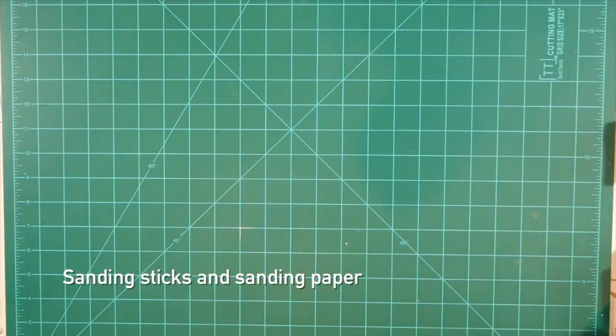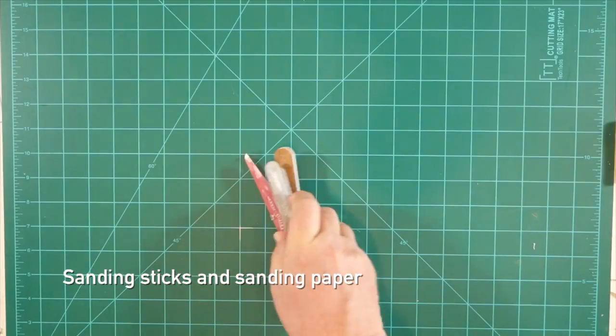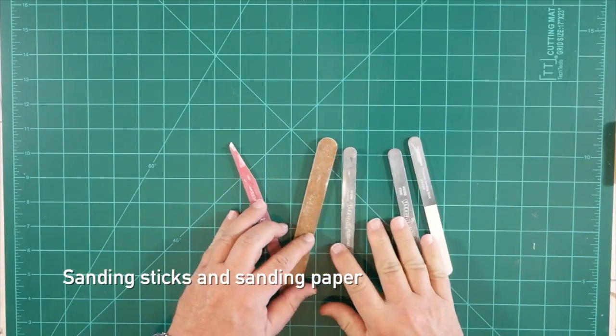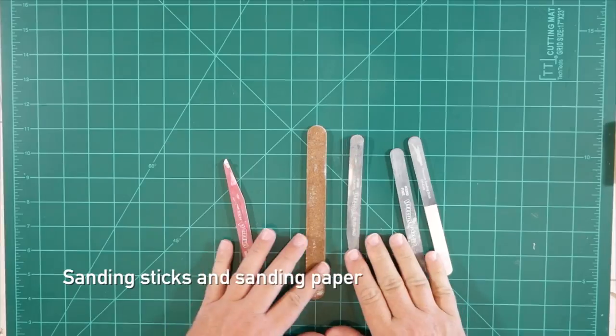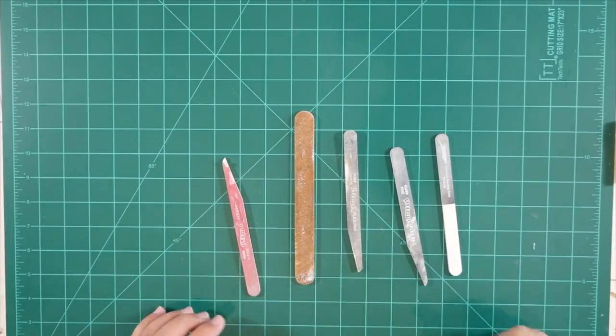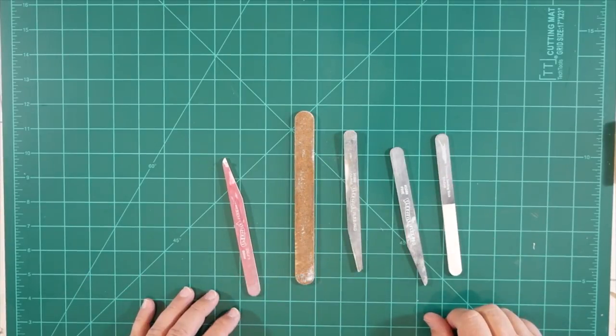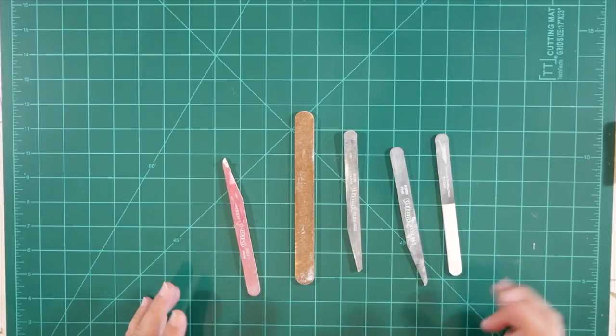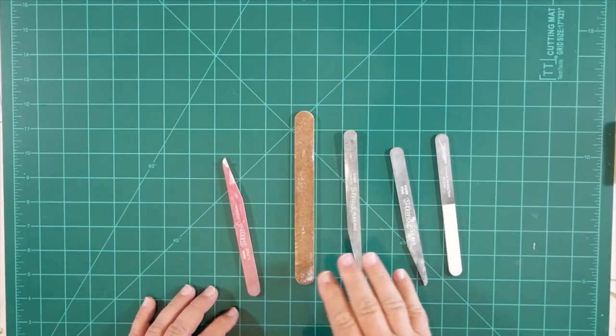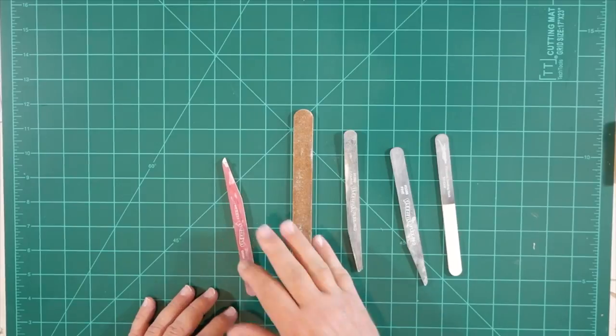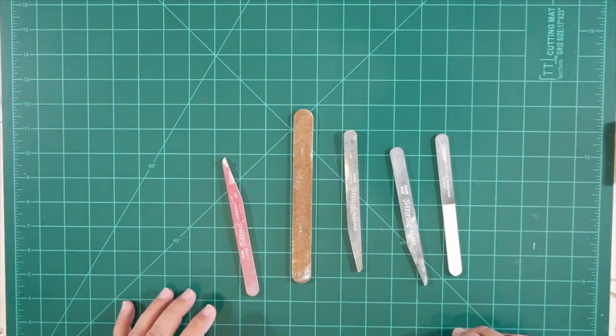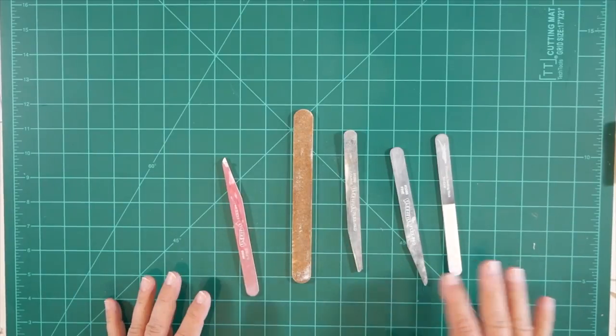You'll also need an assortment of sanding sticks such as these here. These are again available at just about any hobby shop. I purchased these at a hobby shop. I've also gotten them from Squadron Hobbies online in the past. They have a variety of grits ranging from very coarse to very fine and they're used for smoothing parts of the model progressively.